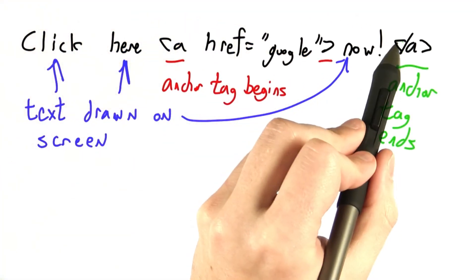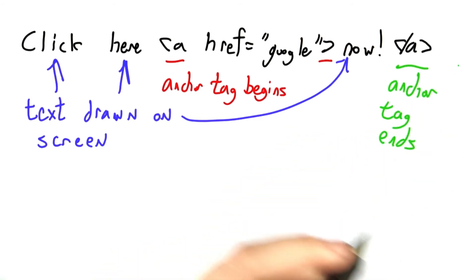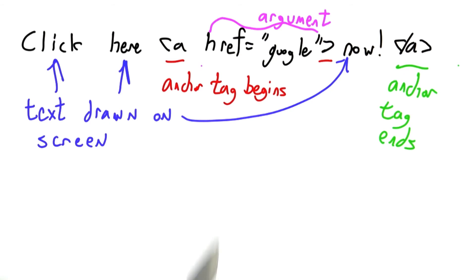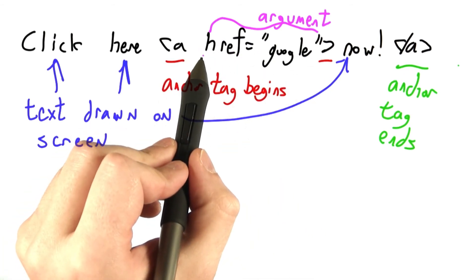This syntax, left angle bracket slash a right angle bracket, marks the end of the anchor tag. And this part in here is the argument of the tag. It contains extra information for things that are more complicated than a simple bold or underline.